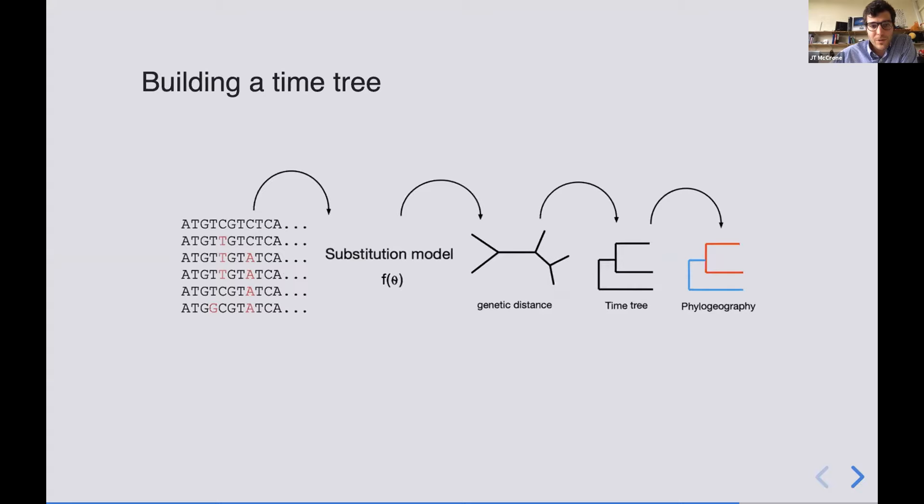So briefly, what I've done over here is building a time tree through a maximum likelihood approach where we start with an alignment, we have some substitution model on the genetic data as well as the location data, we build our tree based on genetic distance, and then we can find the root that best allows us to scale that tree into time and end up with some representation of how the virus has been moving between communities.